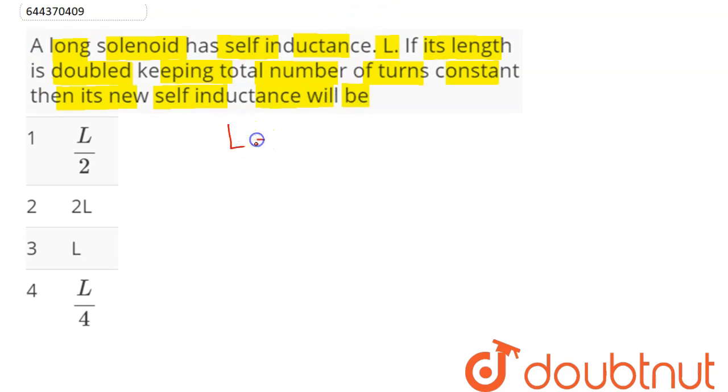So here, for a long solenoid, the self-inductance is given by the formula μ₀ into capital N square into πr² divided by L, which is the length of the solenoid. Now here, it says number of turns, that is capital N is constant. Here, radius of the solenoid is constant, μ₀ is constant.